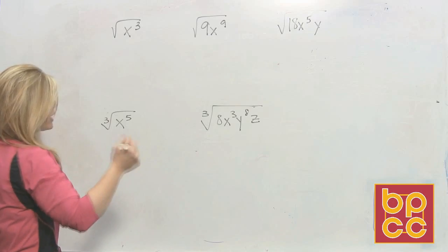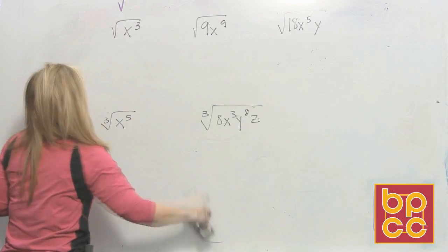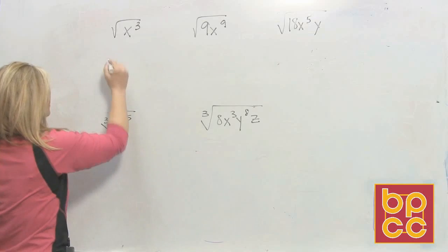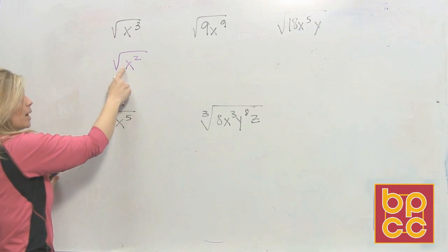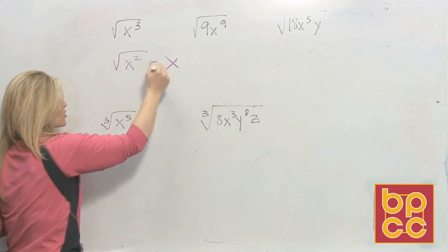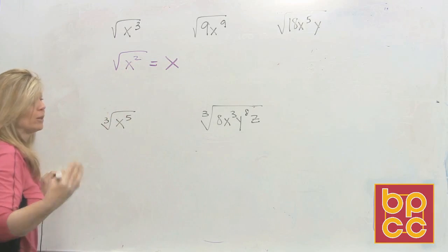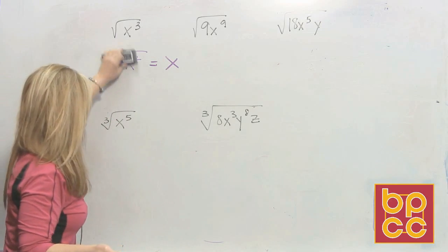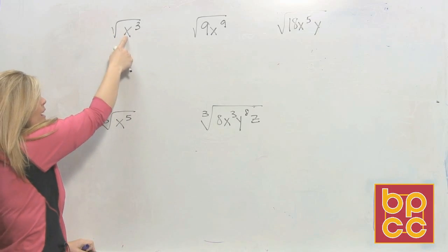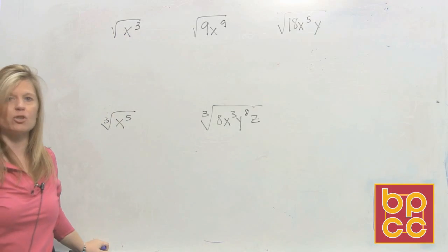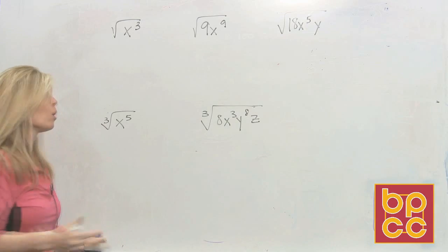We already learned this. If I wrote the square root of x squared, we know the answer — what times itself is x squared? That's x, because you take 2 and divide it by 2 and get 1 with no remainder. We're going to do the same rule here. The rule of square rooting a variable is still divide the exponent by 2, but now you're going to have a remainder. Let me show you why.